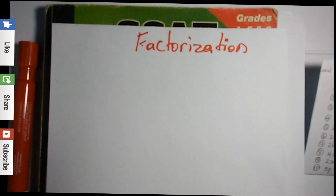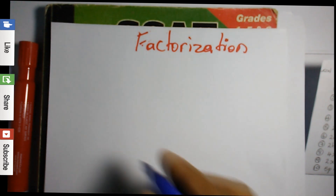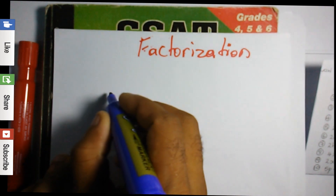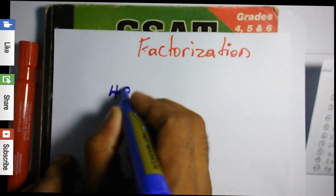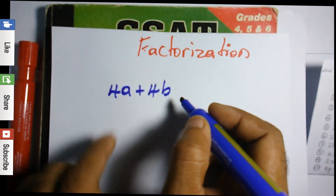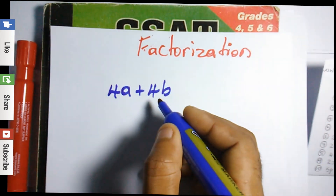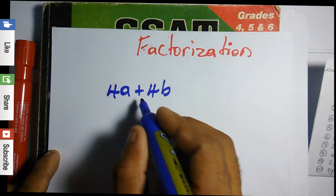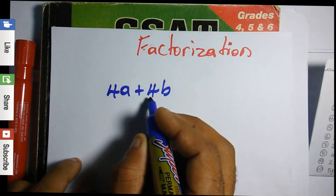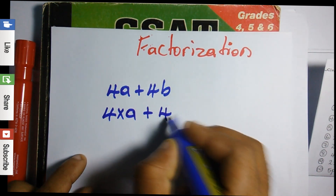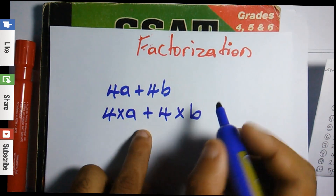With this video we will continue with factorization. In the previous video we did factorization by distributive law, so I'm just going to recap a question on that. For example, we have 4a plus 4b and we're going to factorize this question. To factorize this, we would expand 4a and 4b in terms of multiplication.